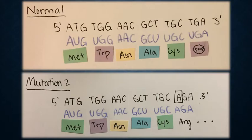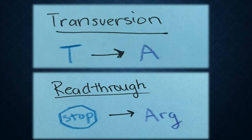For the next mutation, we can see a thymine was mutated to adenine. We can also see that the codon TGA in the normal strand was transcribed to UGA, which is a stop codon, which is different from the codon AGA in the mutant strand, which translates to the amino acid arginine. This is a transversion mutation because a pyrimidine is changed to a purine. This is also a read-through point mutation because a stop codon is mutated to a codon that codes for the amino acid arginine.